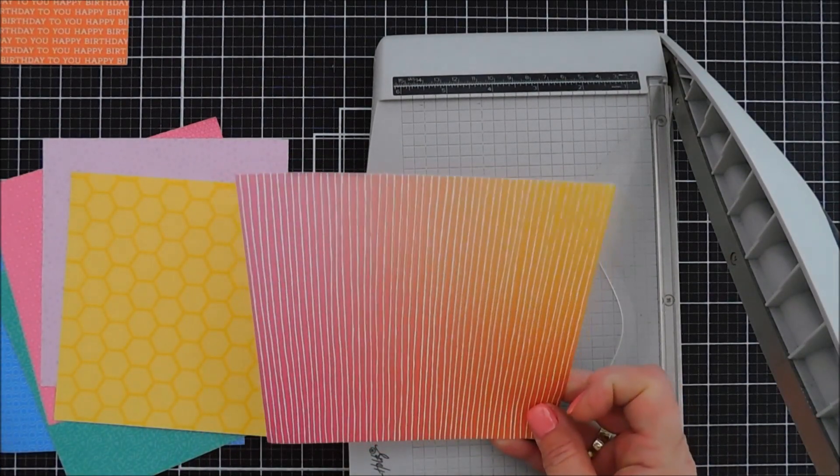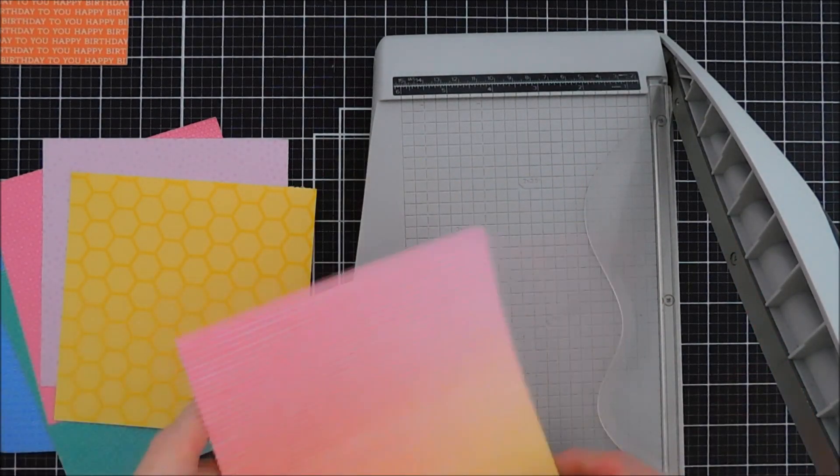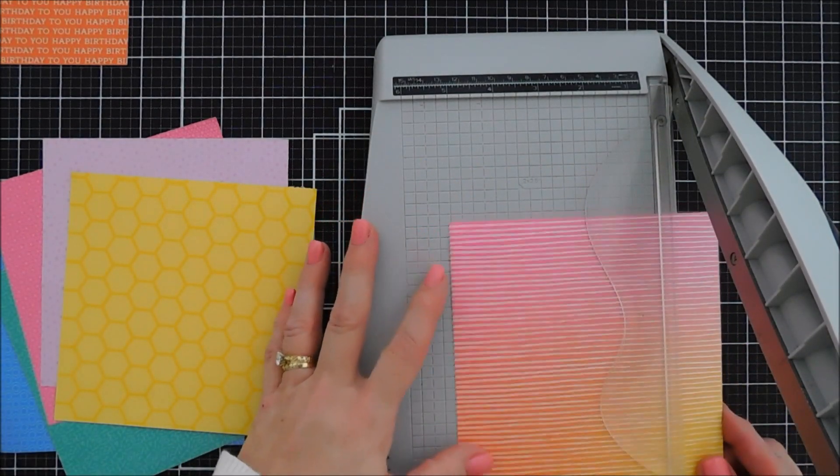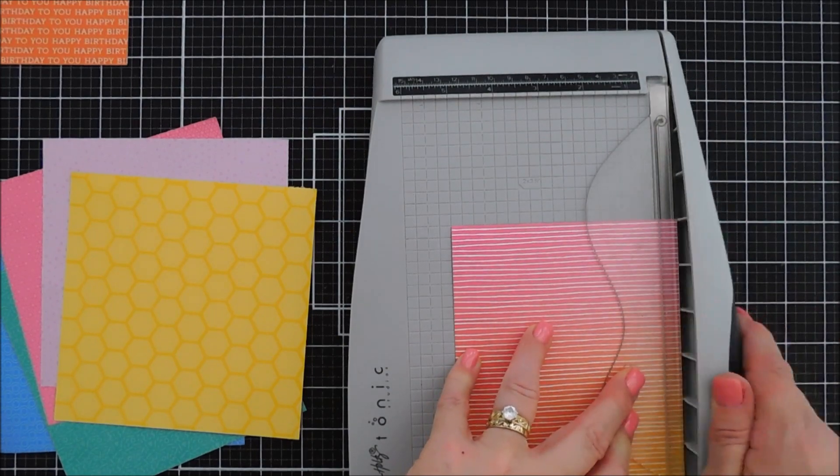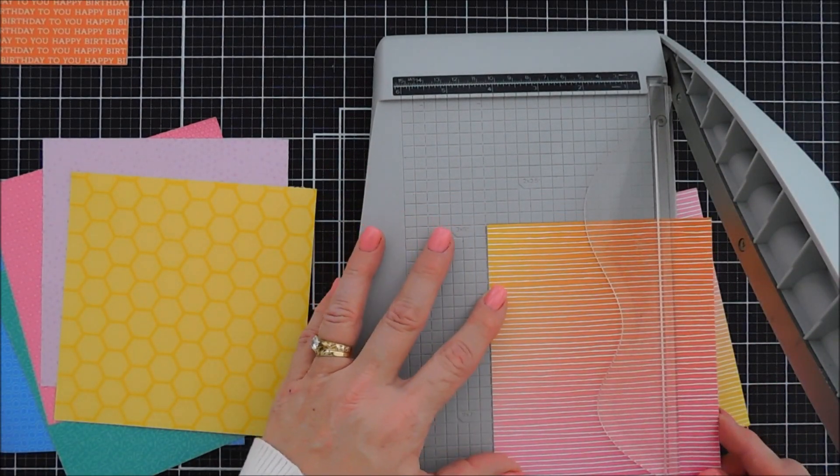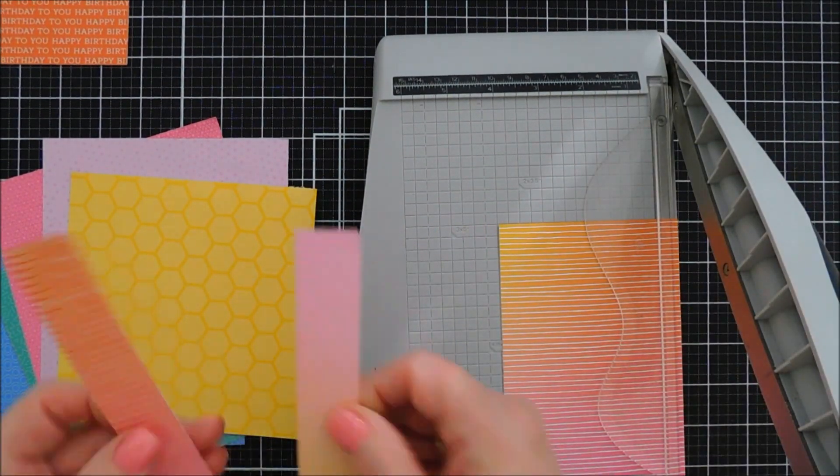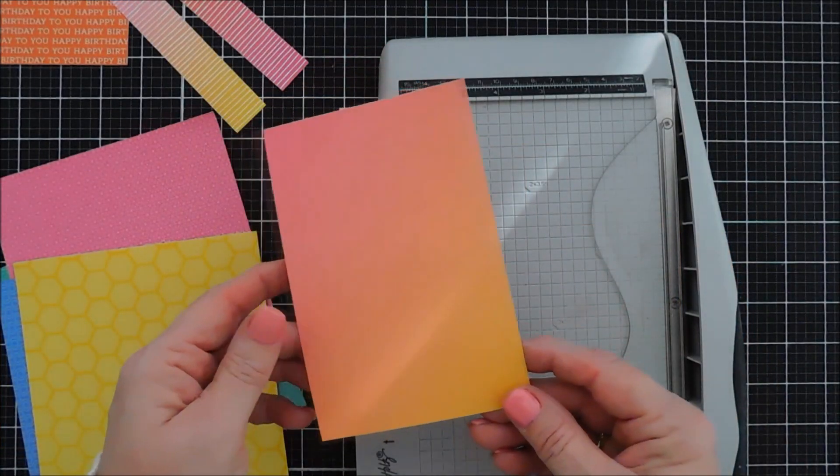Next, we're going to take this kind of an ombre print with white stripes. We're going to trim down two 1-inch strips, but I want the ombre to be different colors. So we'll trim a 1-inch strip this side, flip it around, and then trim another 1-inch strip. Now, I'm not going to trim down the length of it just yet. I'm not sure the size I want. I might adjust that.